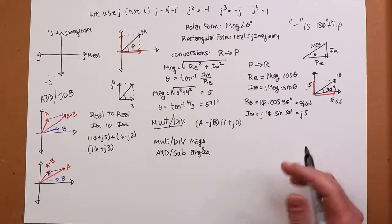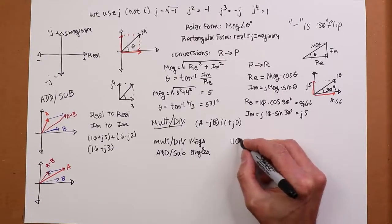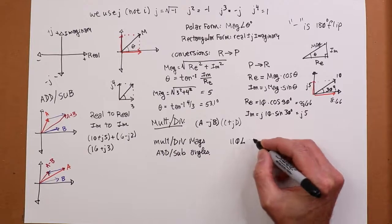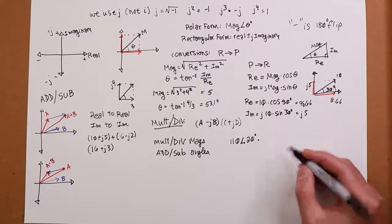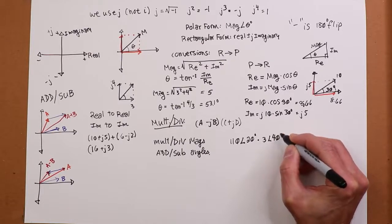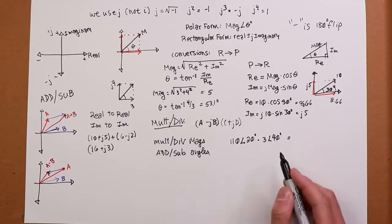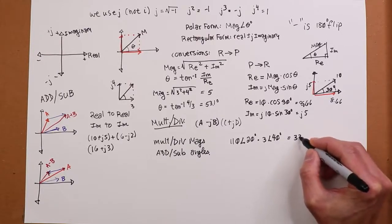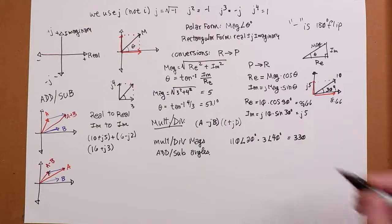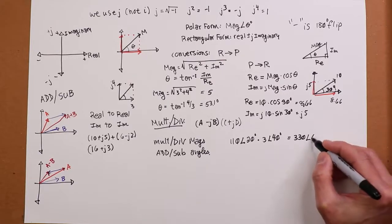So as an example, if you had, let's say, 110 at an angle of 20 degrees, and you want to multiply that by 3 at an angle of 40, you would multiply the magnitudes. So 110 times 3 is going to get you 330, whatever the units happen to be. And then we would add the angles together. So 20 and 40 would give us 60 degrees.